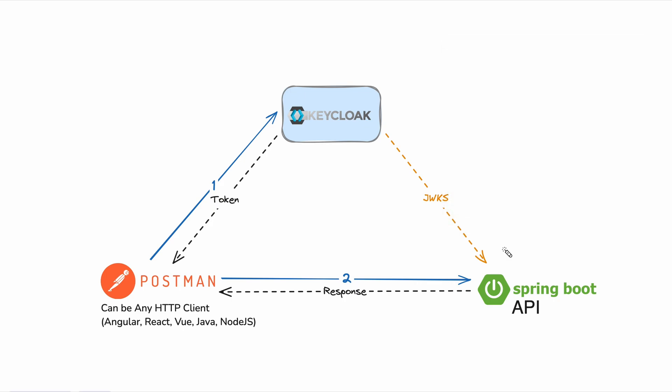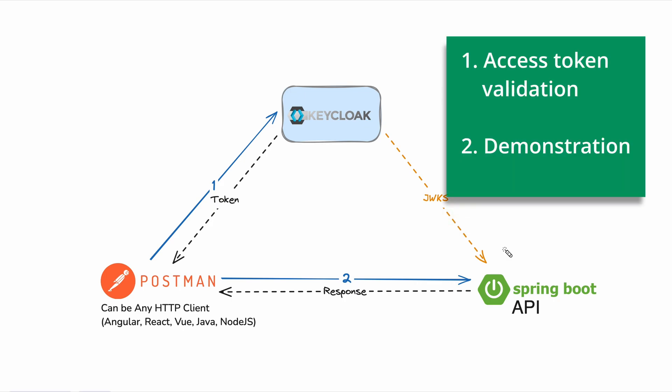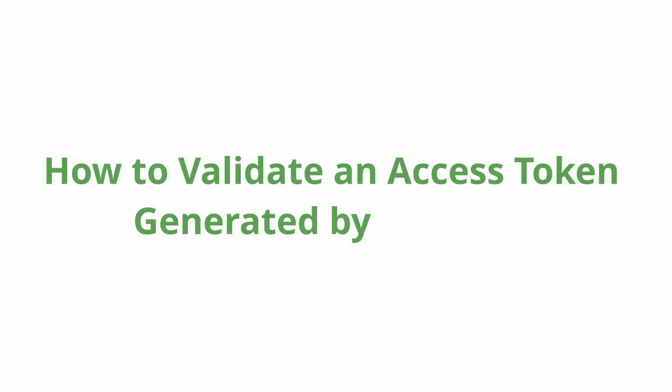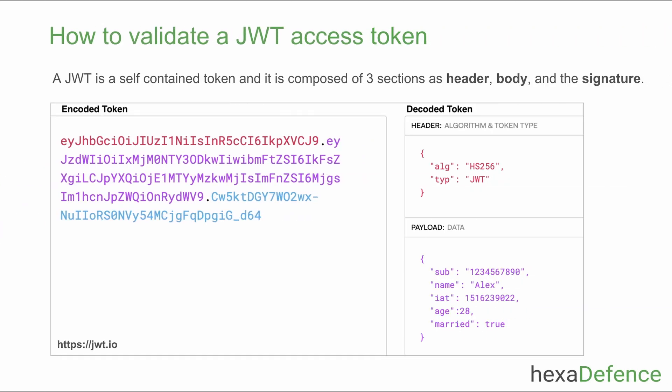In the explanation, I will first talk about access token validation and then show the demonstration. A JWT access token is a self-contained token — the token itself contains information for the backend API to make access decisions.